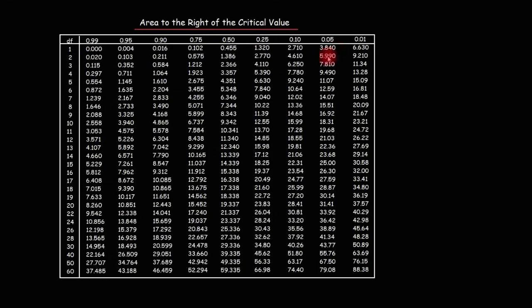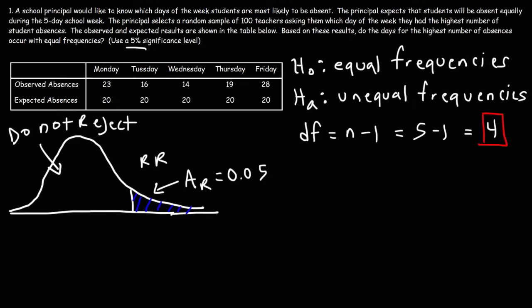So using this column, and we have four degrees of freedom. So using this row, we could see that our critical value is 9.49. So let's place our critical value here.